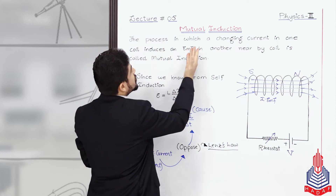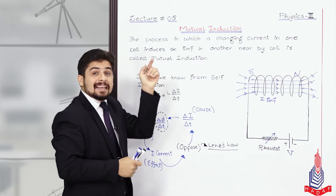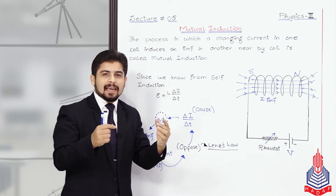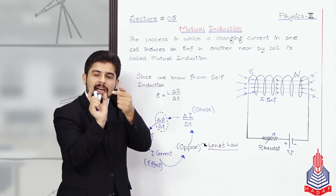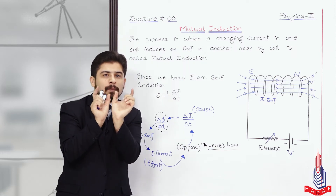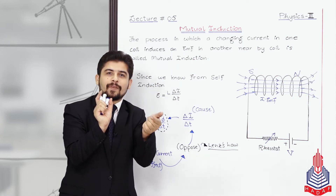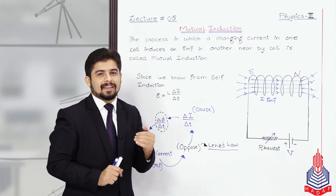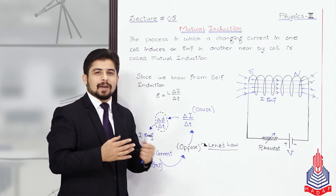The process in which a changing current in one coil induces an EMF in another nearby coil is called mutual induction। एक coil के अंदर आप change in current लाते हो, उससे change in flux आता है, और उस change in flux से उस coil के अंदर EMF induce होता है — that is self induction। लेकिन अगर साथ में पड़ा हुआ secondary coil भी वो change in flux महसूस करे, तो उसके अंदर भी EMF ने induce हो जाना है — उसे हम mutual induction कहेंगे।